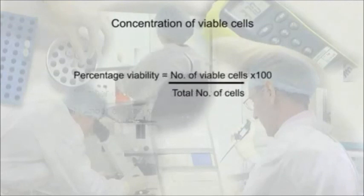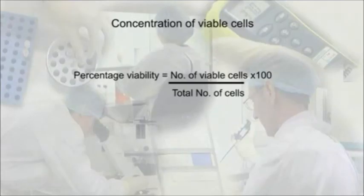Percentage viability is a good indicator of the cell's health. Divide the viable cell count by the total cell count — the total of live plus dead cells — and multiply by 100 to give a percentage.